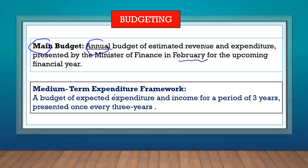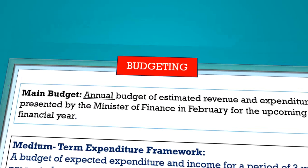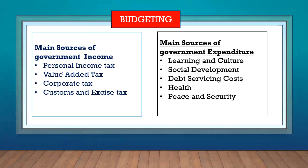The medium-term expenditure framework is a three-year budget, also presented by the Minister of Finance, but presented every three years — whereas the main budget is presented every year. The government gets most of its income from personal income tax, followed by VAT, then corporate tax, and then customs and excise taxes.